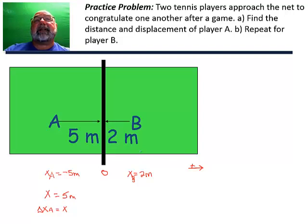Okay, to find the distance that player A travels, we just need to know the path length. Player A is going to go from negative five meters to zero meters. Player A travels five meters. We're not interested in a direction, just the distance.